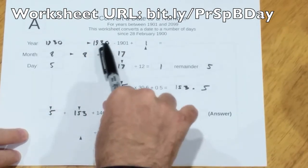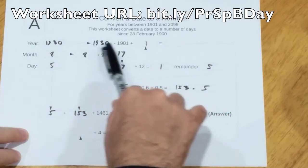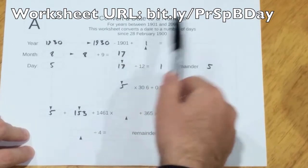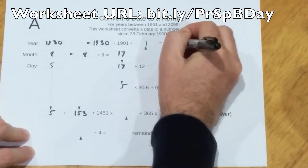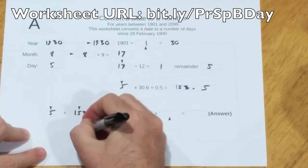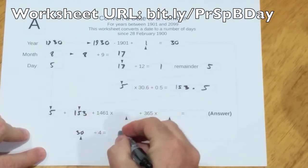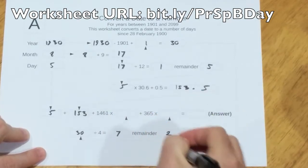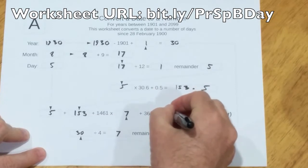This answer here, 1930 subtract 1901 is 29, plus 1 is 30. I'll copy the 30 across here. 30 divided by 4 is 7, and the remainder is 2. And these get copied up here.